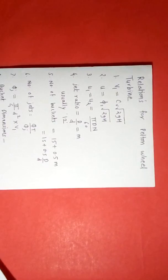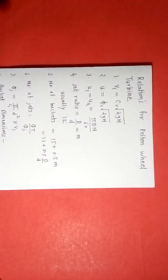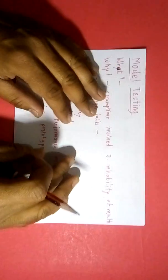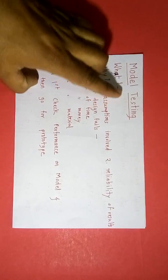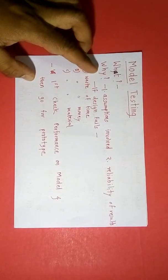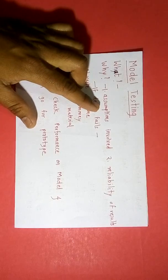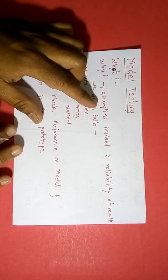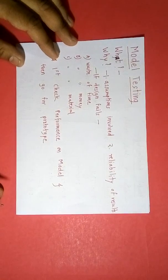While designing a Pelton wheel turbine we do not go directly for an actual prototype because there are some limitations. Instead we first build a model. Model testing means performing tests on a model. Why carry out model testing? Because while designing a turbine we make a number of assumptions: one-directional flow, steady flow, and we do not consider boundary condition effects or flow breakdown. Due to these assumptions the reliability of results is not adequate, so if the design fails...